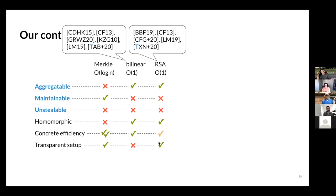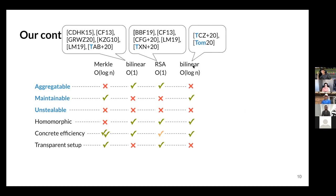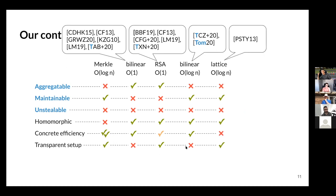RSA-based constructions lose a little efficiency compared to bilinear ones but gain transparent setup if using class groups. Bilinear log-size constructions, summarized in my thesis, are maintainable but not aggregatable, not unstealable, lack transparent setup, but maintain concrete efficiency — a proof in our TCZ+20 paper is as big as a Merkle proof, 32 bytes per node, but with extra homomorphic benefits. Lattice-based constructions are maintainable, homomorphic, have transparent setup, but are horrendously inefficient and also not aggregatable.